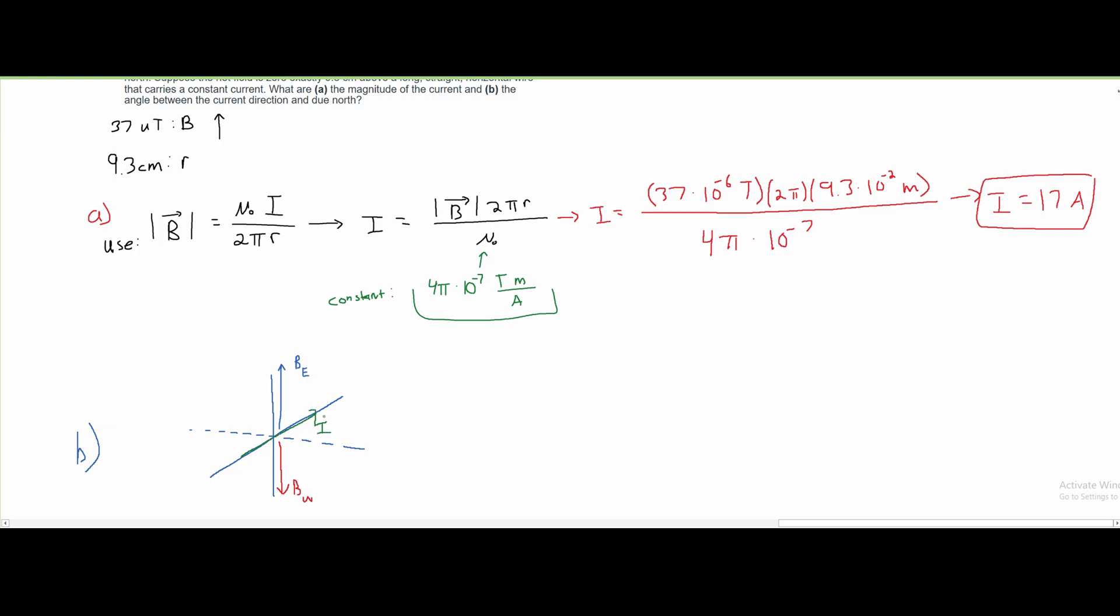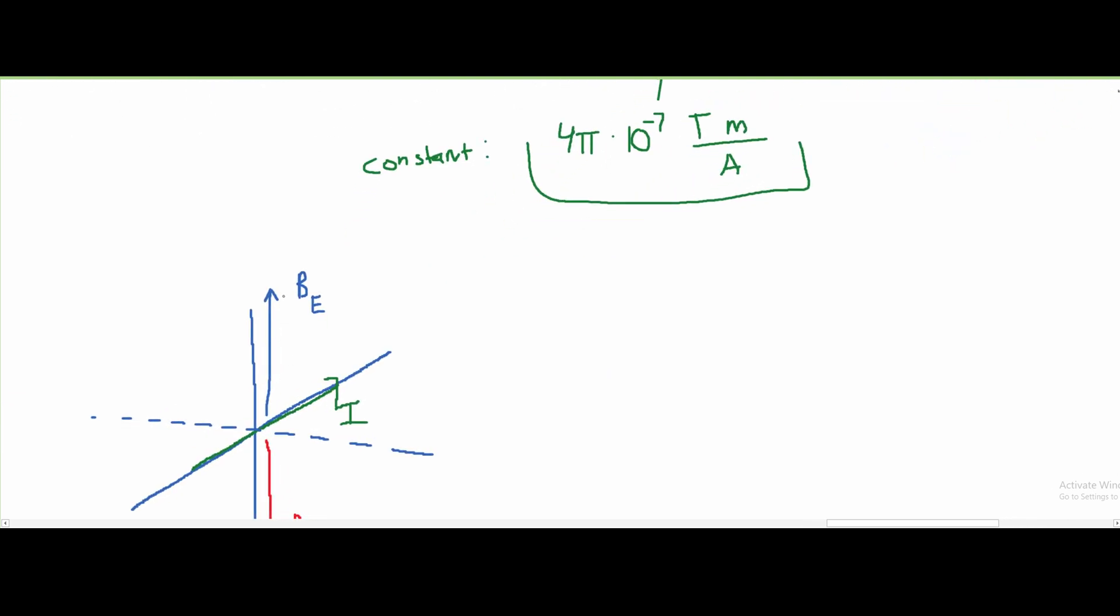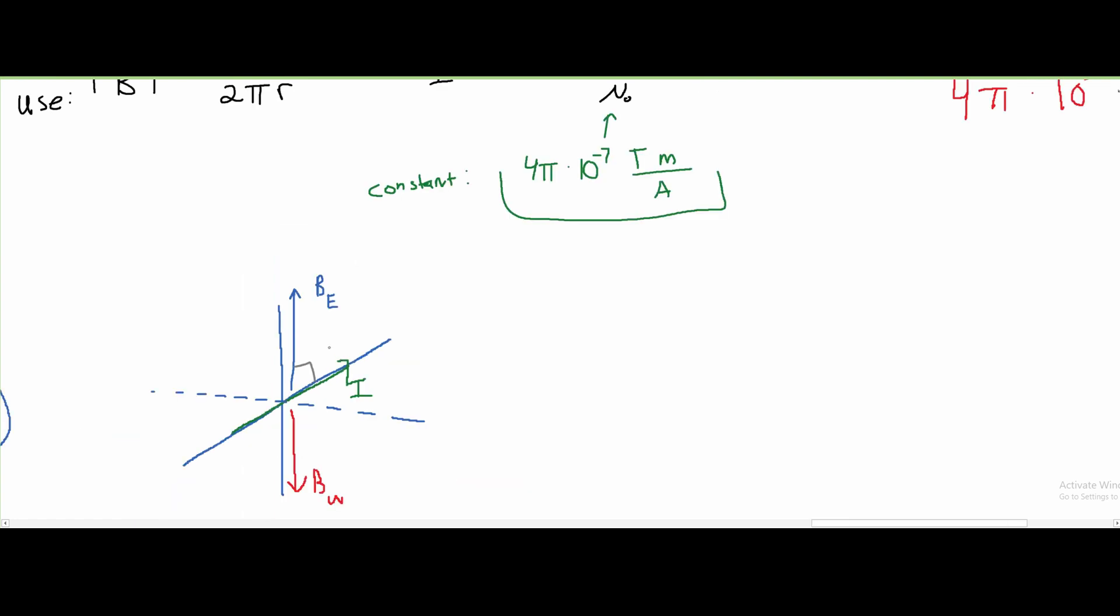And we're asked the angle between the current direction and due north. Well, if our due north direction, which is Earth, is B of E and our current is I, that means inside of here, we have an angle that is 90 degrees. So, our answer is just going to be 90 degrees for part B.